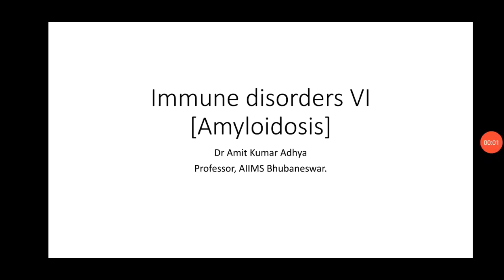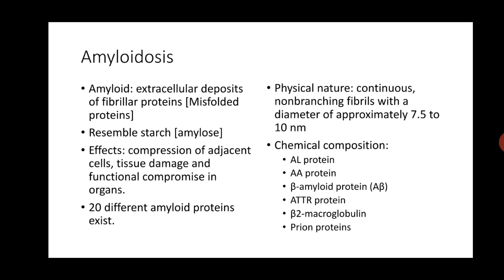Hello students, welcome to the sixth lecture on immune disorders. Here I shall talk about amyloidosis. Amyloid is an extracellular deposit of fibrillary proteins. These proteins are misfolded proteins, so they are very difficult to remove from the site where they are deposited. The proteins resemble starch, hence the name starch-like or amyloid. The effects are basically due to compression of adjacent cells, tissue damage, and functional compromise in the organs where they get deposited.